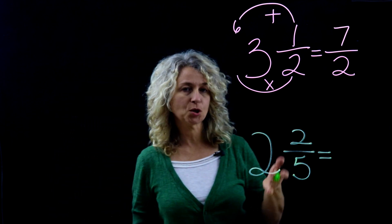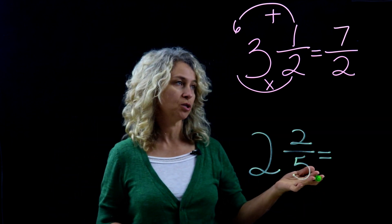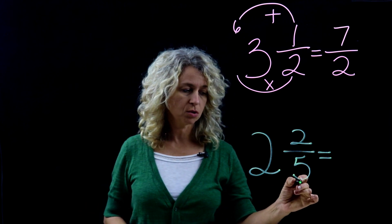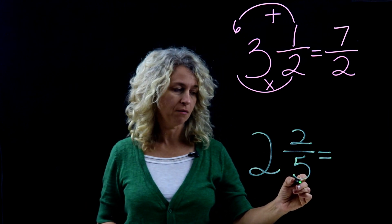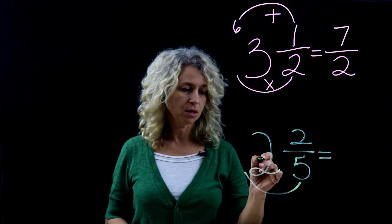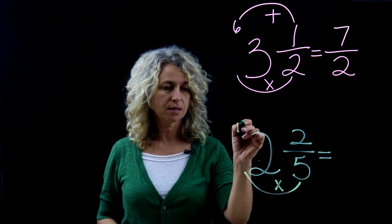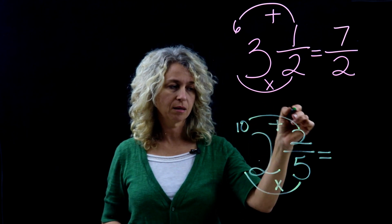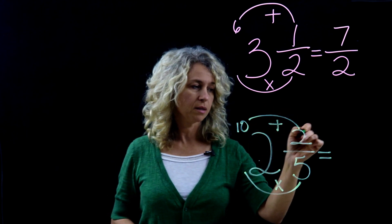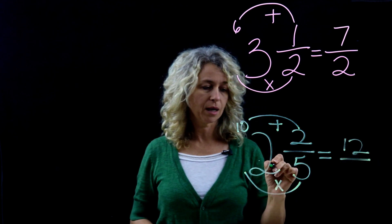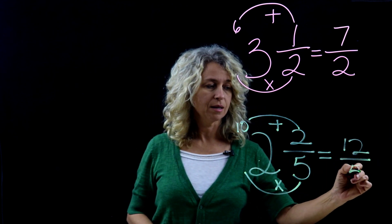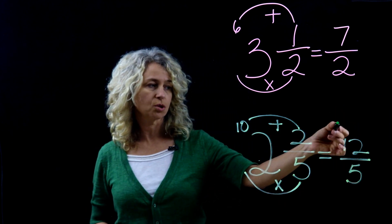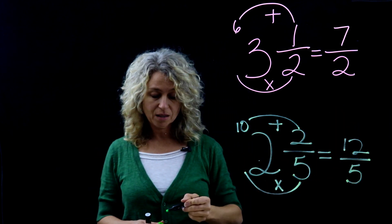Here's another example: 2 and 2 fifths, and we're going to change it to an improper fraction. Using the same method, we multiply 5 times 2 to get 10, and then add 10 plus the numerator to get 12. Your denominator will always stay the same. So 2 and 2 fifths equals 12 fifths.